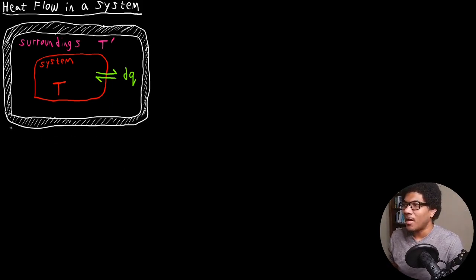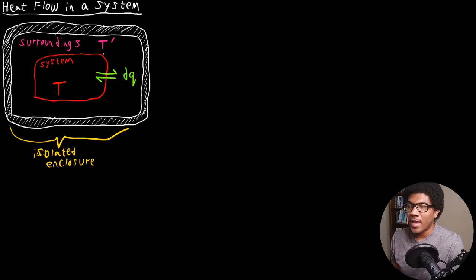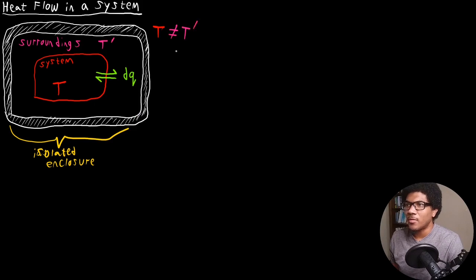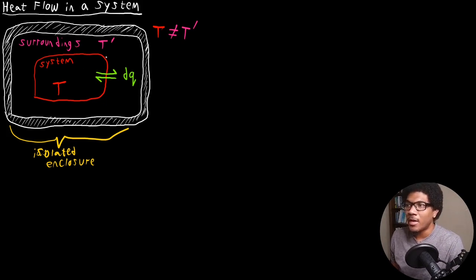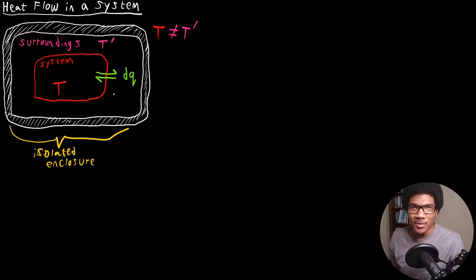What I've drawn here is our usual figure in an isolated enclosure. We know that if we have this system and surroundings at two different temperatures — the system at temperature T and the surroundings at temperature T prime — such that T is not equal to T prime, then there's going to be some heat flow between the system and surroundings until they reach thermal equilibrium. Depending on whether T prime is greater than or less than T will determine the direction of heat flow, which we haven't established yet, so I drew a double arrow here.